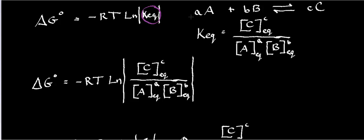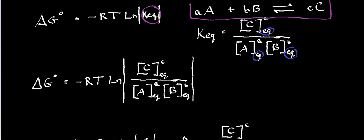For a generic reaction — A moles of A plus B moles of B in equilibrium with C moles of C — the equilibrium expression is given as follows. To denote concentrations at equilibrium, I put the subscript EQ. From now on, wherever I'm talking about equilibrium concentrations, I'll put that EQ subscript. If I don't, you're to assume it's not at equilibrium, in which case we won't be dealing with KEQ.